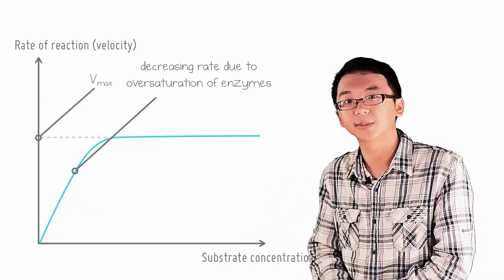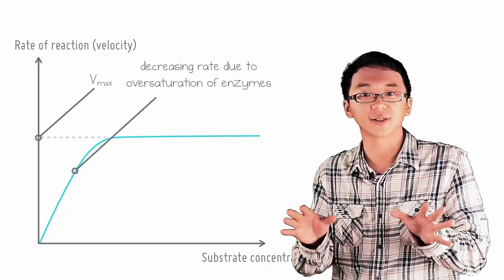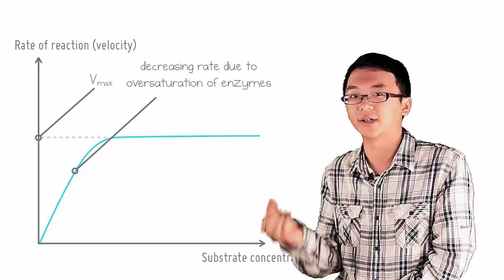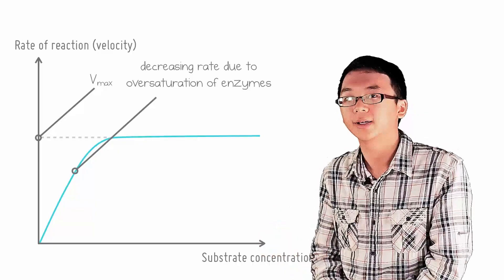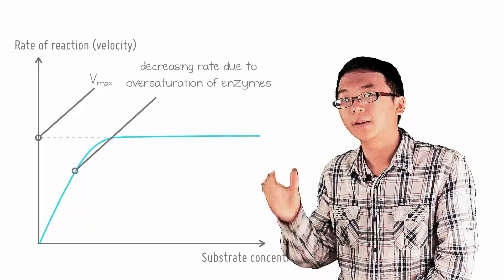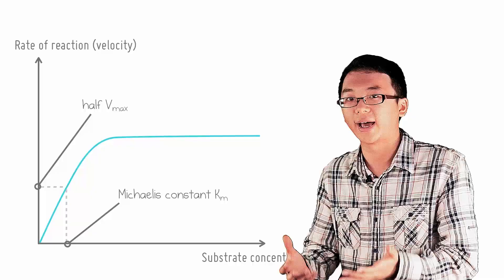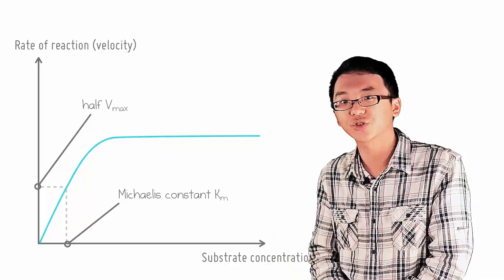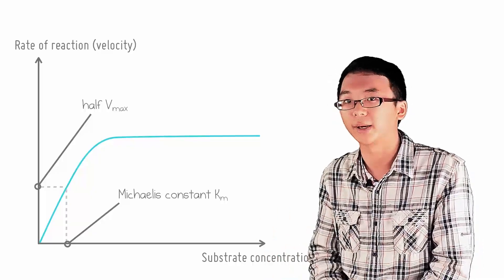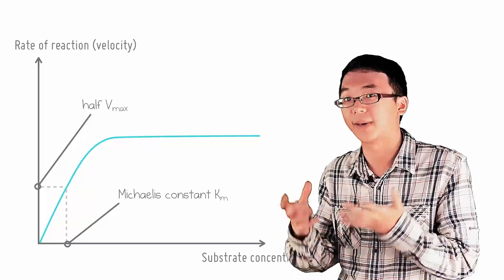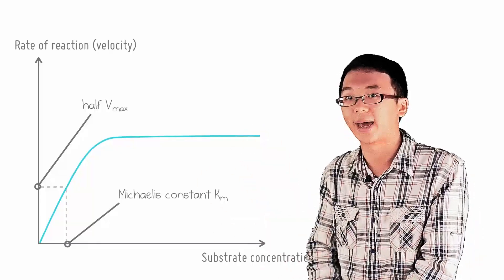When studying enzymes, we would like to investigate how changes in various factors affect the enzyme's affinity for the substrate. It's time to introduce the term Michaelis constant, often written as Km, which is the concentration of the substrate required to make the reaction go at half its maximum rate, indicated by half Vmax.